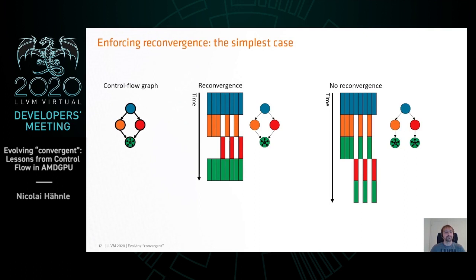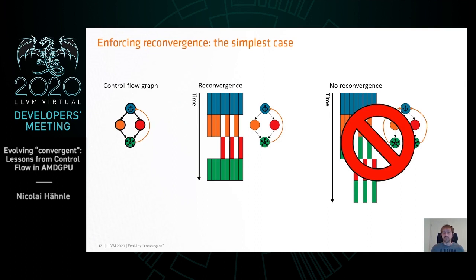Let's look at an example. Here is a simple hammock with a convergent operation at the bottom block. There are two possible ways of executing this: one where reconvergence happens and one where it doesn't, giving two different dynamic instances. If we put an anchor at the top and refer back to that, then by the rule we just saw, the convergent operation must also be the same dynamic instance — so that enforces reconvergence.